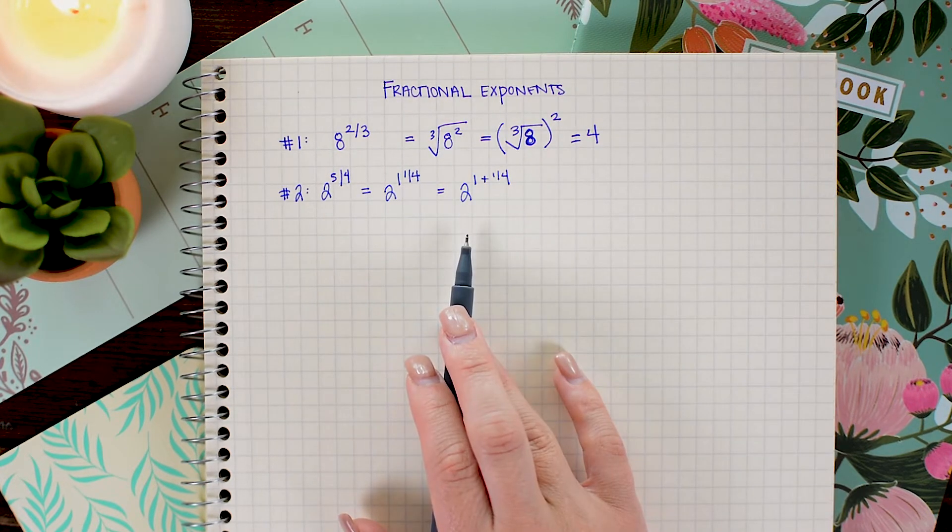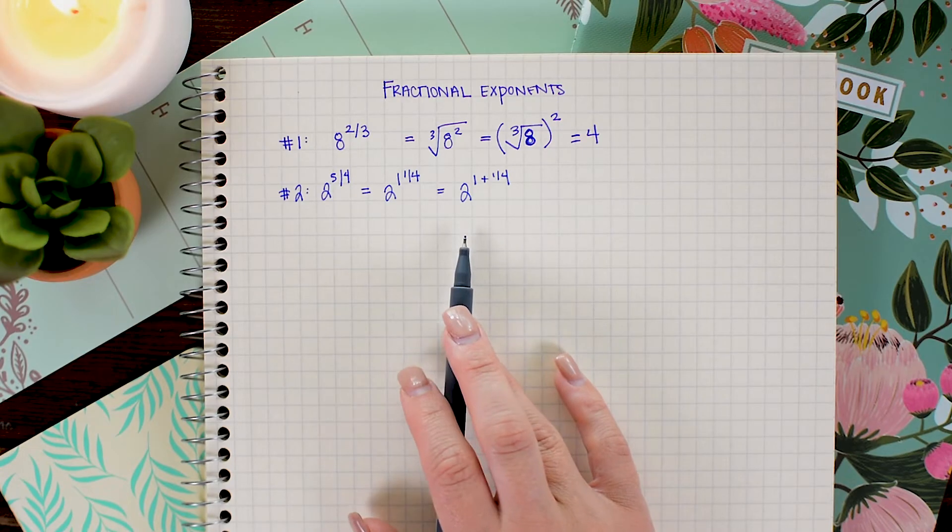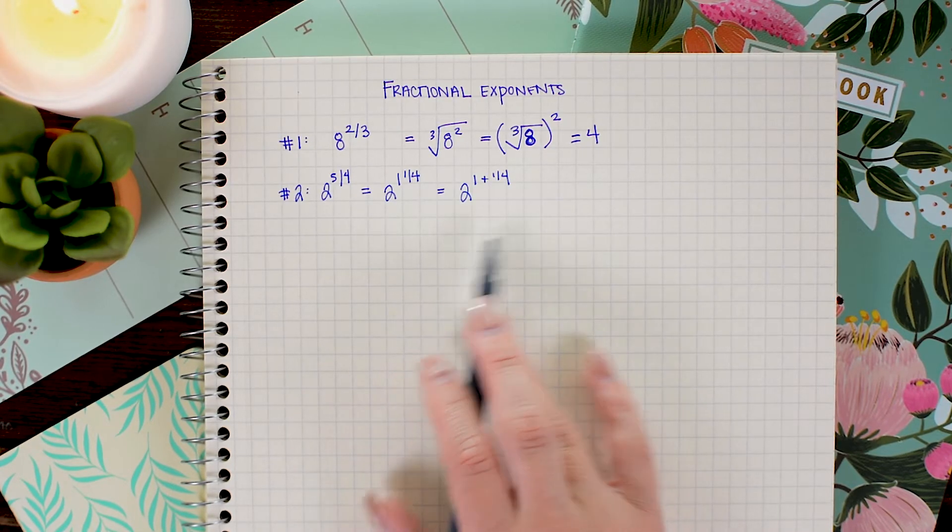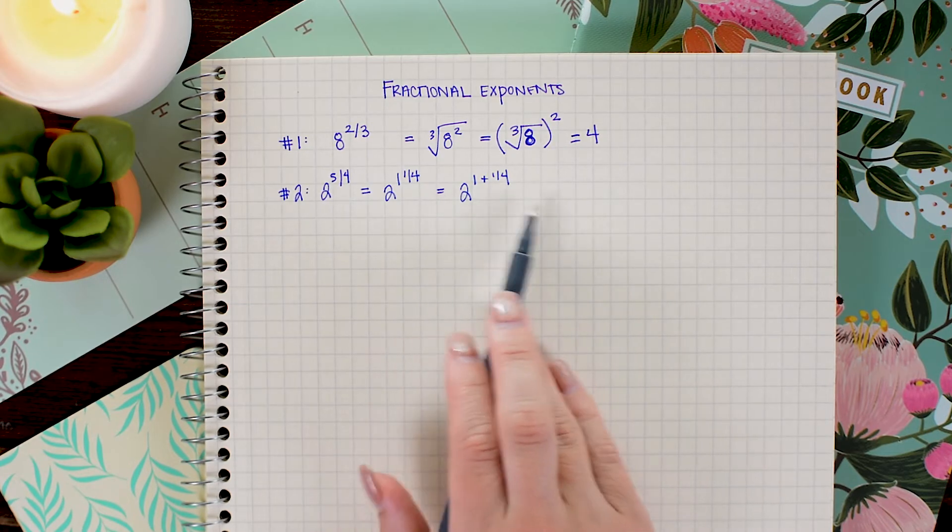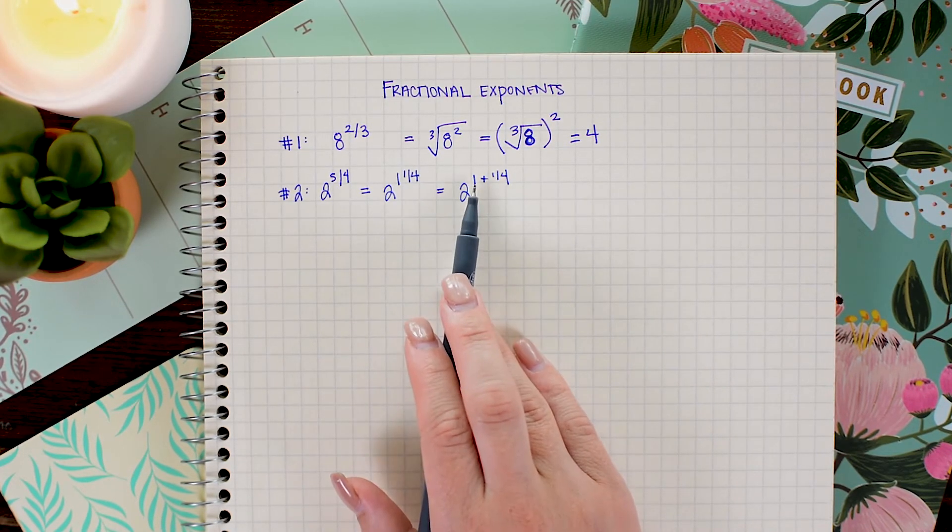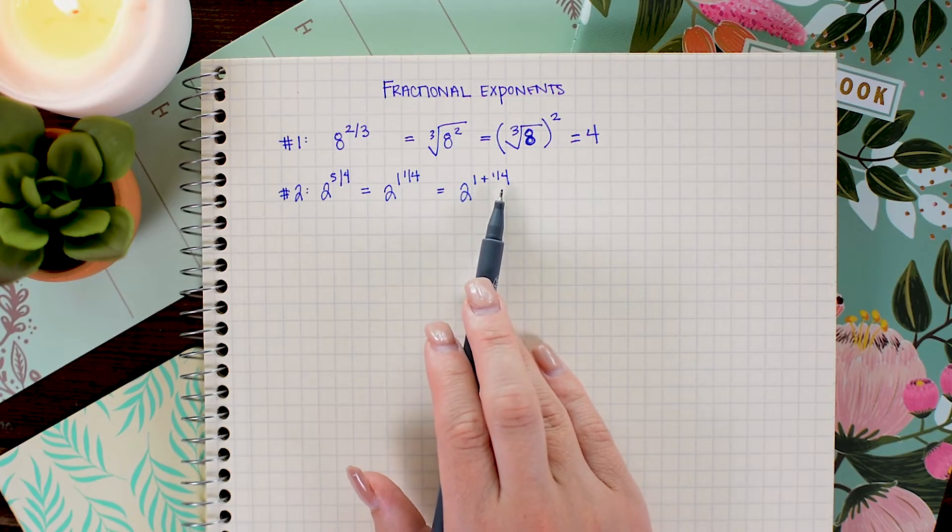So you may remember from our exponent rules that if I have two numbers with the same base, I add their exponents. So I could do the exact reverse of that, and I could split this into two separate twos being multiplied together, one with an exponent of 1 and the other with an exponent of 1 fourth.